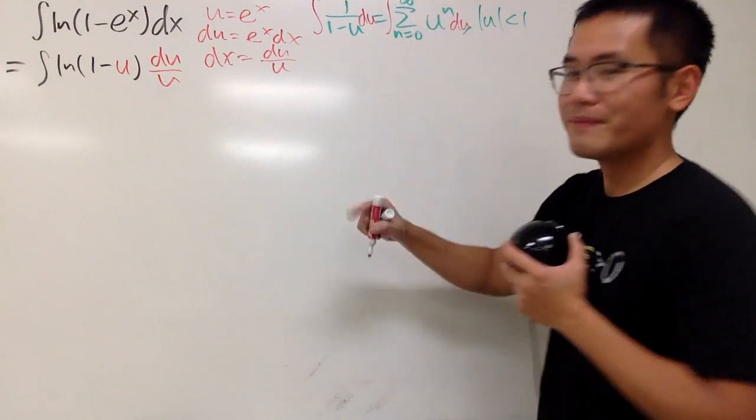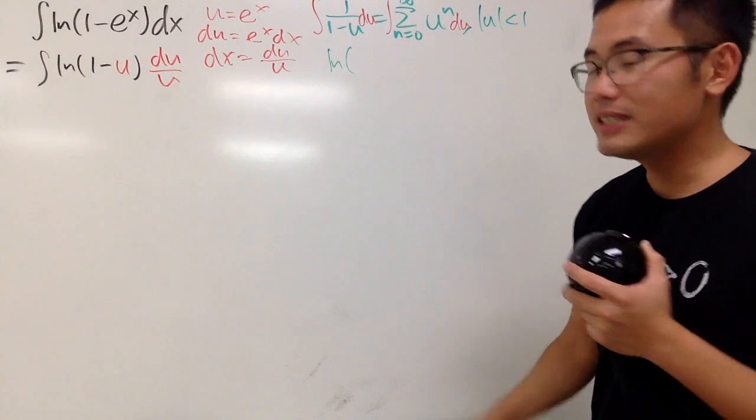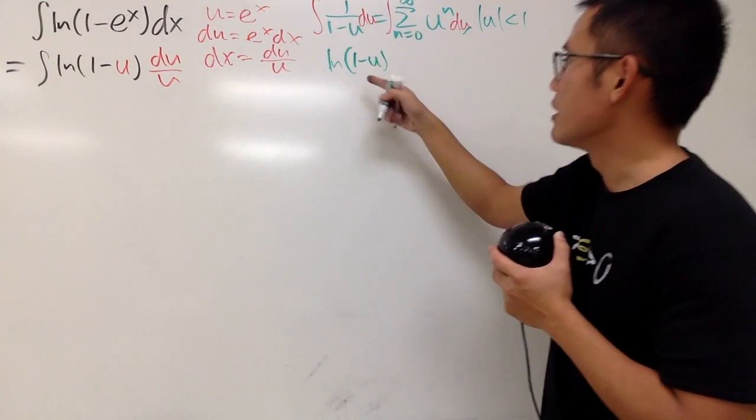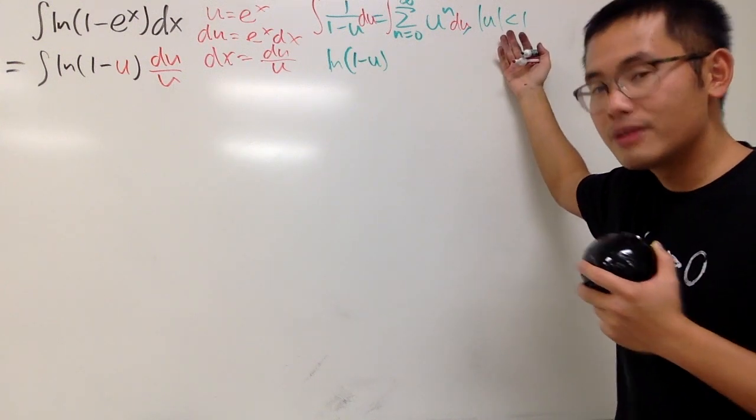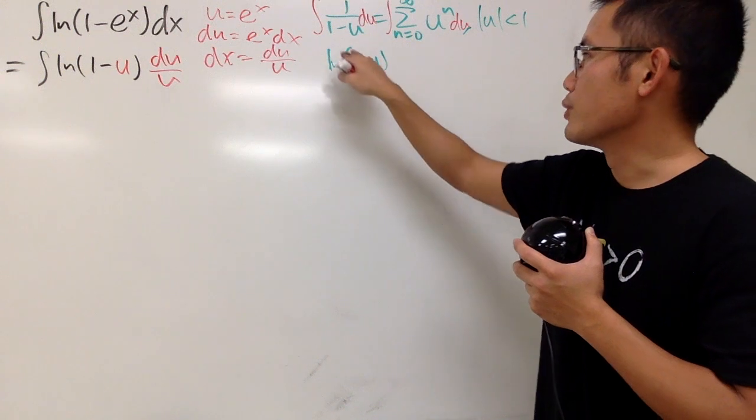Very nice. On the left side, we get ln, parentheses. Yes, I put down parentheses because 1 minus u is always non-negative, right, under this condition. And this is also not equal to 0, so that's good.